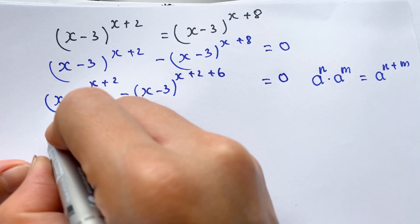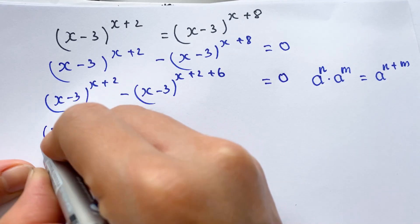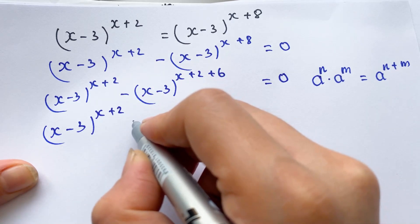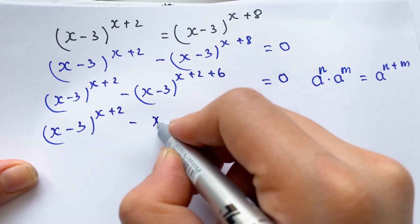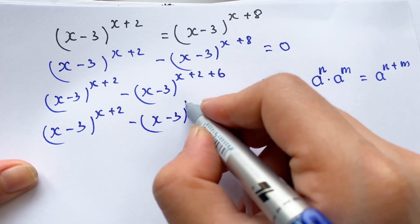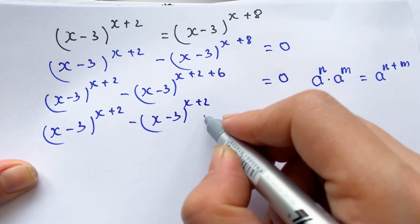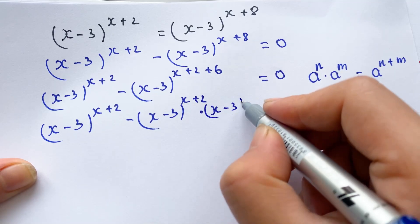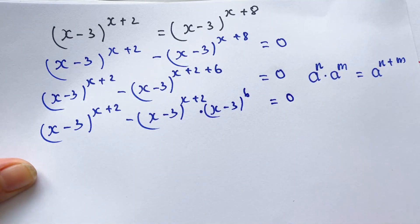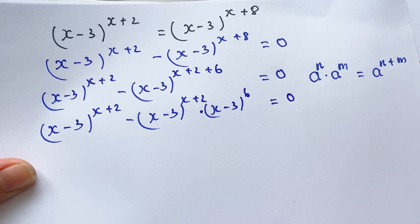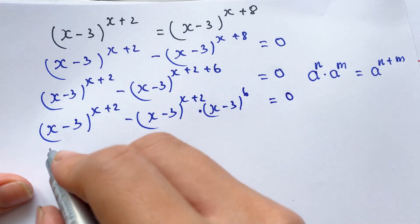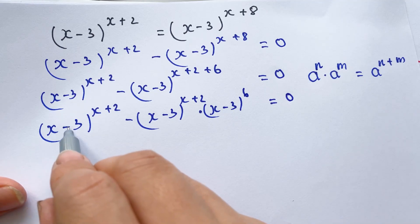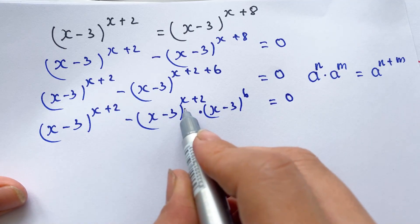And then, (x-3)^(x+2) times (x-3)^6 equals 0. And so, everyone can see we have the common factor (x-3)^(x+2), right?